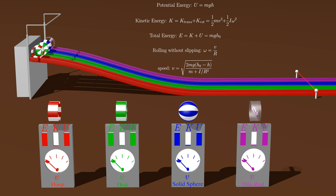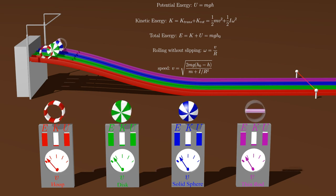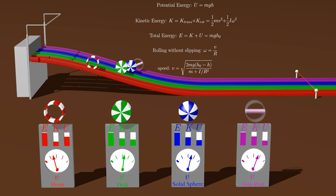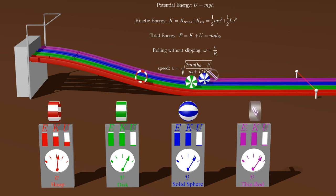With some algebra, an expression for v can be obtained. One easy result is that, at a given height, the greater the rotational inertia I, the slower the speed of the object.